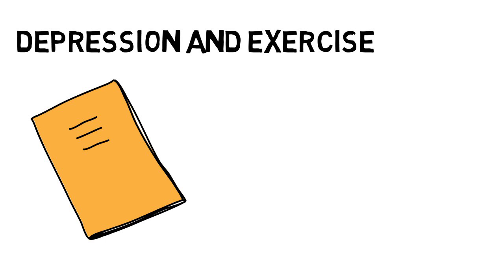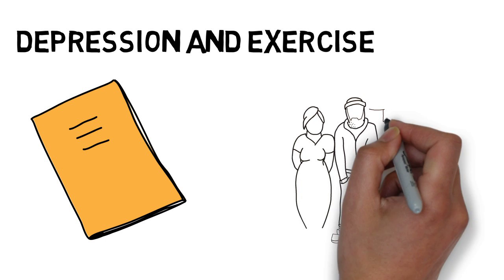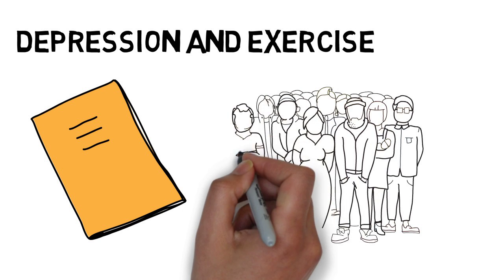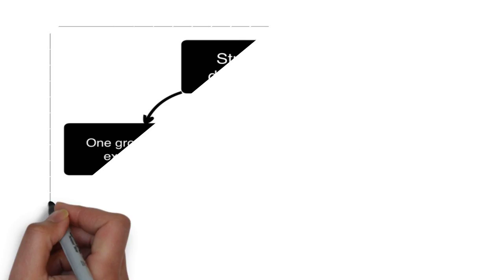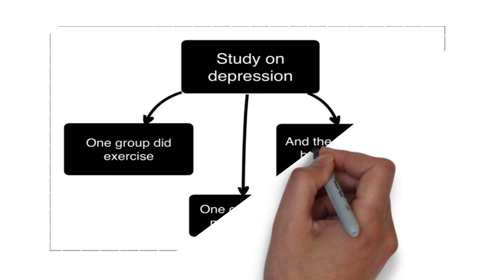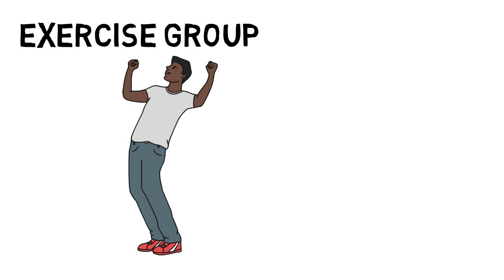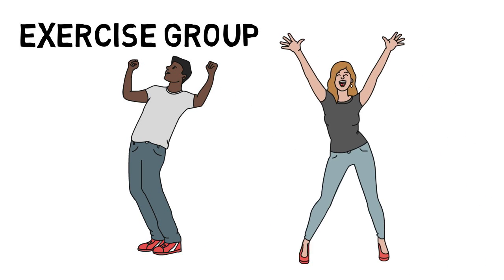So let's first talk about a study done in 1999. 156 people engaged in this study and they comprised of both male and females. One group did exercise, one group took medication, and the third group did both exercise and medication. After 16 weeks, the exercise group was found to be equally effective in reducing depression.